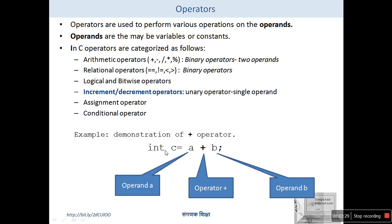Let's have a demonstration about the plus operator. If in C a statement is written as int C = A + B, then A and B are operands and plus is the operator. The operator plus is performed on A and B, and the result is stored in variable C. This statement is terminated by a semicolon — anything terminated by a semicolon is called a statement.